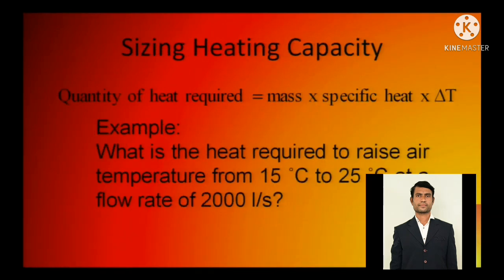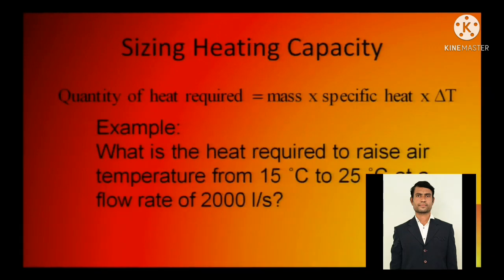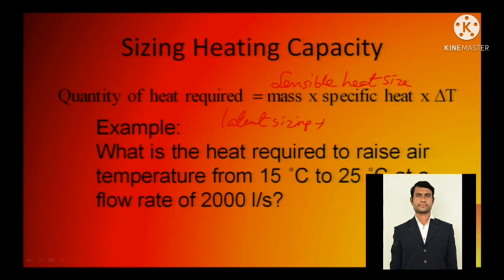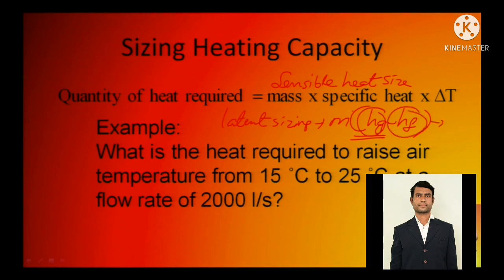The sensible heat sizing equation is Q equals m·Cp·ΔT — the mass of the fluid, the specific heat of that fluid (which could be a gas as well), and the temperature difference. For latent heat sizing, it is m-dot times (Hg minus Hf), which we commonly call Hfg — the enthalpy of gas minus the enthalpy of fluid. This covers latent heat of vaporization or condensation.